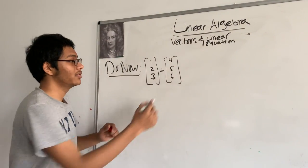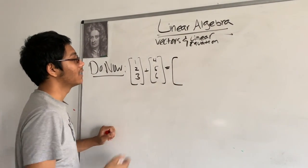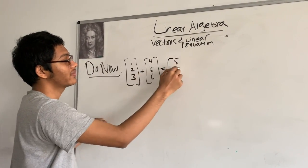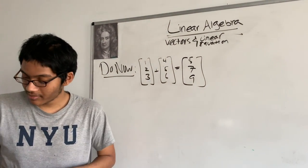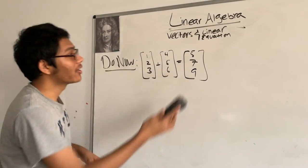So this do now is very easy. We have to add these two vectors. 1 plus 4 is 5, 2 plus 5 is 7, and 3 plus 6 is 9. So this is going to come out to be very important during our main lecture.